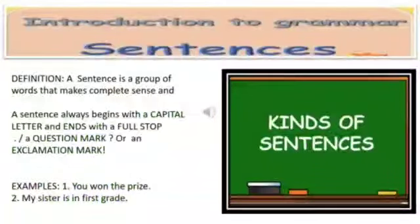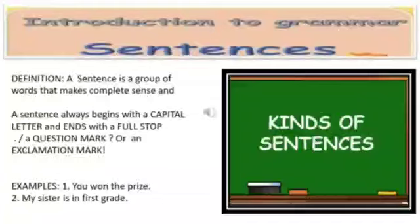What is a sentence? Before we proceed to the kinds of sentences, the definition. A sentence is a group of words that makes complete sense. A sentence begins with a capital letter and ends with a full stop, a question mark, or an exclamation mark. See the examples here. You won the prize. My sister is in first grade. These are examples of a sentence.